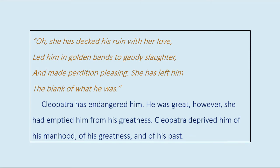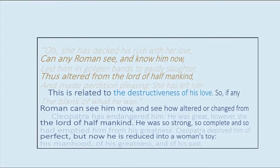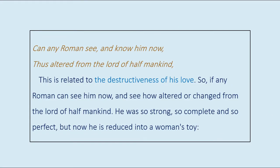'She has left him the blank of what he was.' Cleopatra has endangered him — he was great, however she had emptied him from his greatness. Cleopatra deprived him of his manhood, of his greatness, and of his past. 'Can any Roman see, and know him now, thus altered from the Lord of half-mankind' — this is related to the destructiveness of his love. If any Roman can see how changed he is from the Lord of half-mankind, he was so strong, so complete and so perfect, but now he is reduced into a woman's toy.